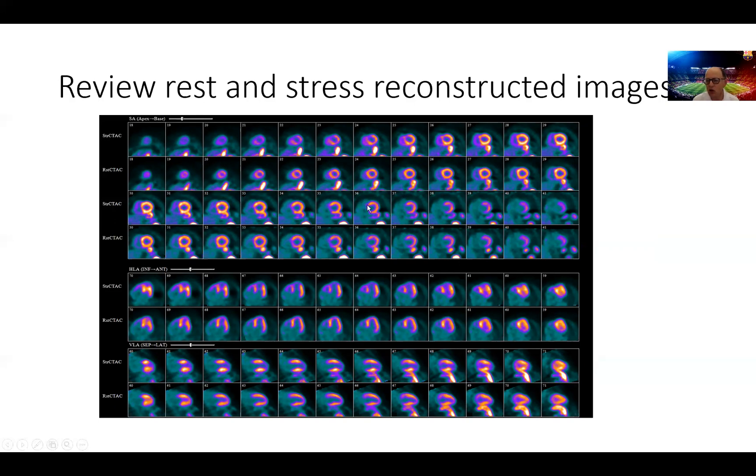Again, this looks like a normal rest study, except for a very minor perfusion defect in the apex that can be either a true defect with a very minor perfusion defect, or it can be just due to physiologic apical thinning, given the highest spatial resolution of the PET machine.